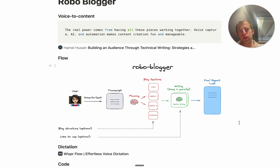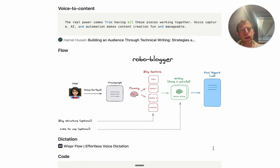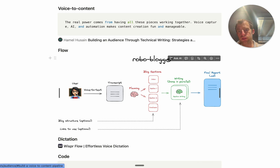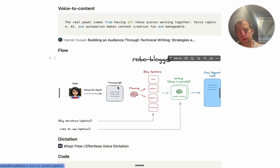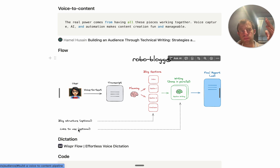This pipeline called RoboBlogger is our first cut at doing this using an integrated voice and AI agent automation pipeline. The flow is basically this: as a user, I use a voice-to-text app to create a transcript of what I want to write a blog about — like a stream of consciousness. The assistant then takes that transcript along with optionally a general structure and some links, and produces a high quality blog post. We're going to build that all from scratch, but first I want to show how it works end to end.